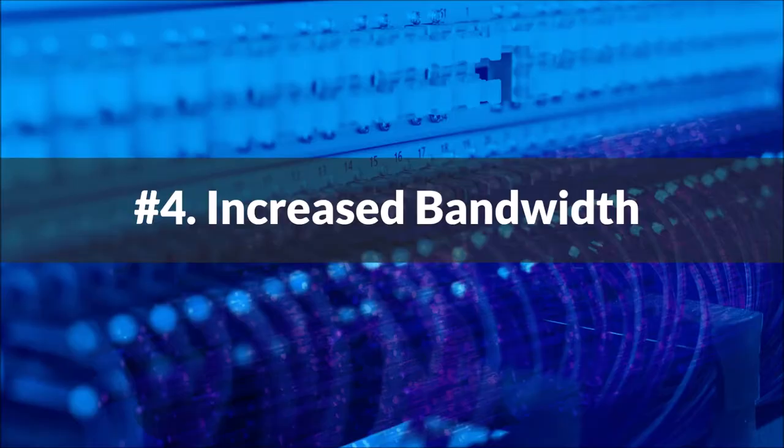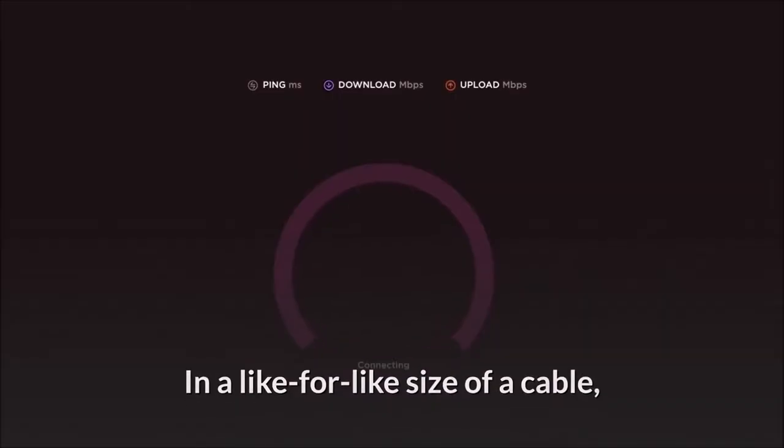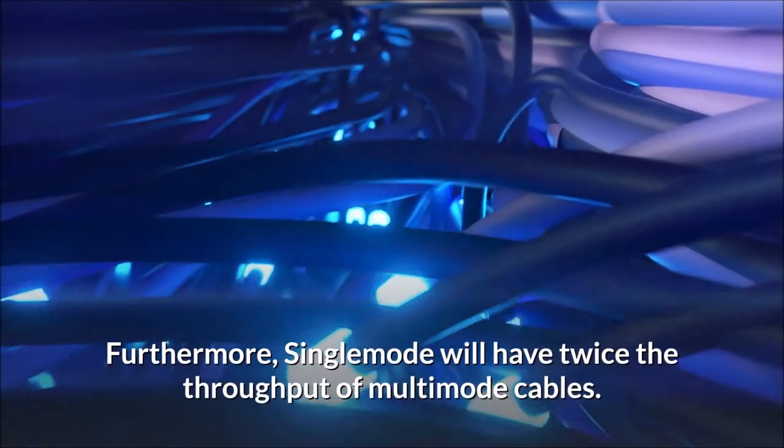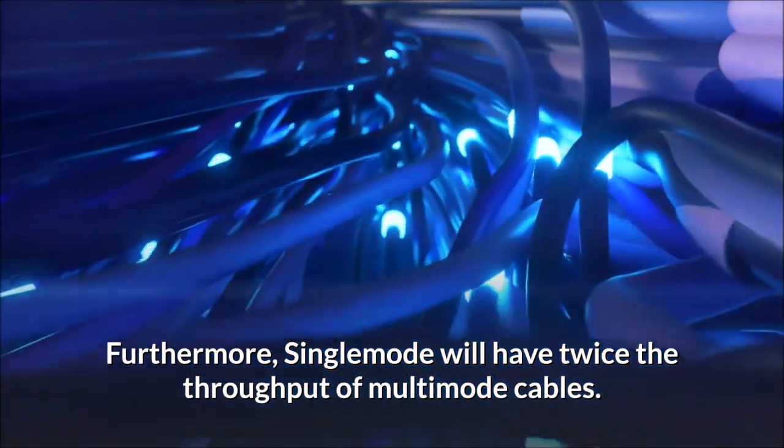Number 4: Increased Bandwidth. In a like-for-like size of cable, the fiber cable will carry a greater bandwidth compared to the copper equivalent. Furthermore, single mode will have twice the throughput of multi-mode cables.